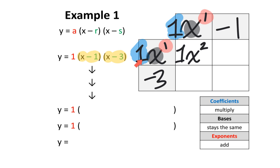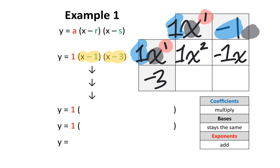Next, we multiply x by negative 1. The coefficient here is positive 1 and the coefficient here is negative 1. Multiplying them gives you negative 1. For the bases, the base here is x, but there is no base on the other term, so the base stays as x. The exponent here is 1, and since there is no base on the other term, that exponent of 1 stays the same. So the result is negative 1x to the power of 1.